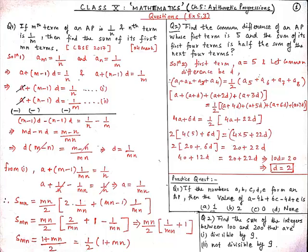Therefore: (1/2)(a5 + a6 + a7 + a8). In the LHS: a + (a+d) + (a+2d) + (a+3d) = (1/2)[(a+4d) + (a+5d) + (a+6d) + (a+7d)]. In the LHS we get 4a + 6d, which equals (1/2)(4a + 22d). Cross-multiplying, we get 2(4×5 + 6d) = 4×5 + 22d, i.e., 2(20 + 6d) = 20 + 22d.